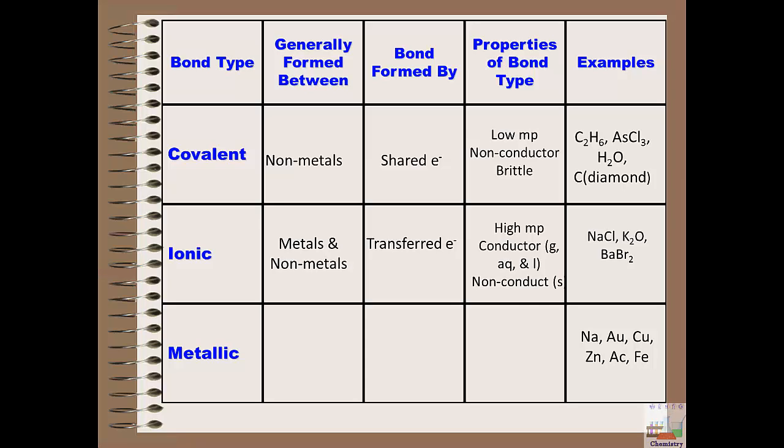Finally, metallic bonds, as the name indicates, we would expect them to be formed between metal and metal, and the special characteristic of the electrons in this case is that delocalization.